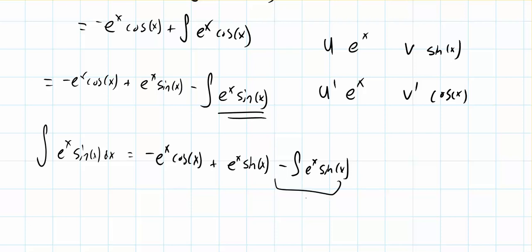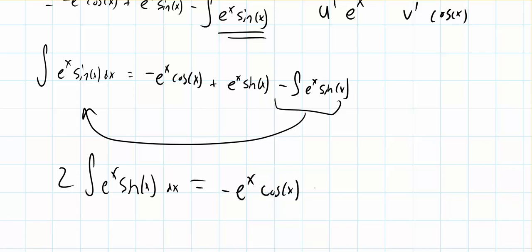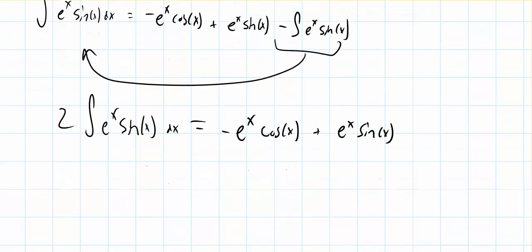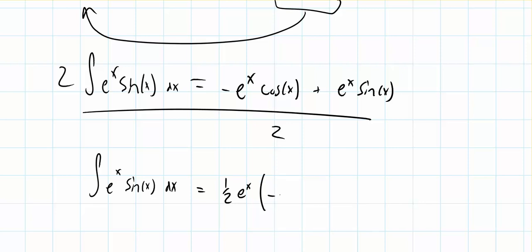We take the integral of e to the x sine x from the right side and bring it over to the left side of the equation, making it 2 times the integral of e to the x sine x dx, which equals negative e to the x cosine x plus e to the x sine x. Dividing by 2, the integral of e to the x sine x dx equals one half times e to the x, factoring that out, times the quantity negative cosine x plus sine x, plus our constant of integration.